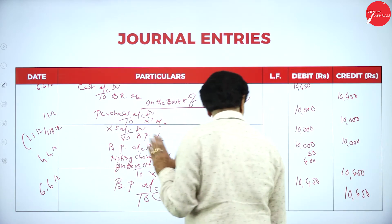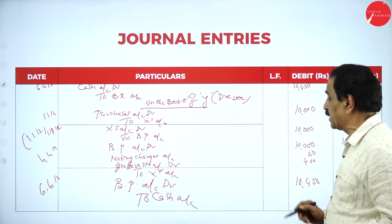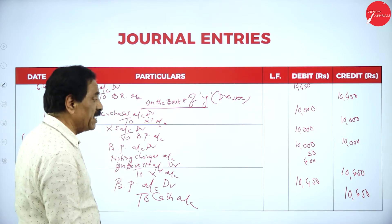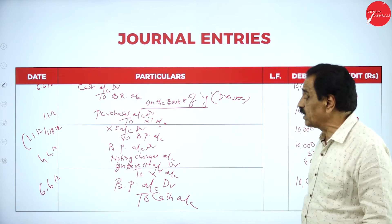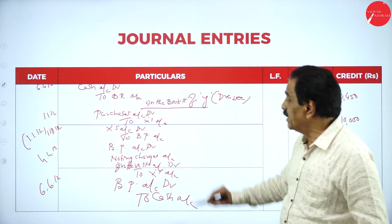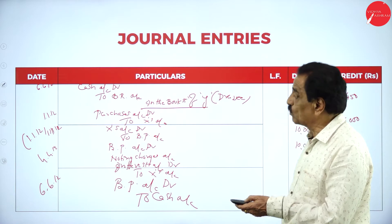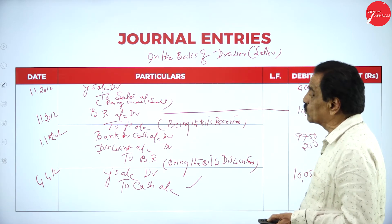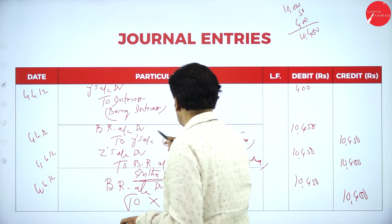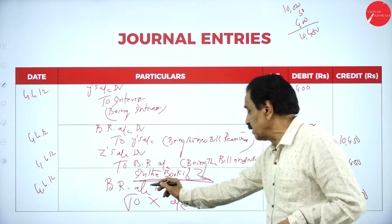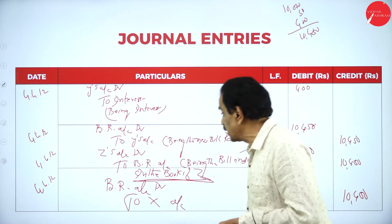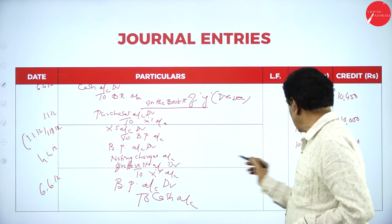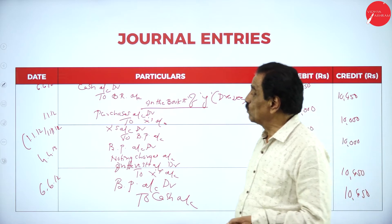X account debit — bills payable. He has to pay the bill amount: 10,000, noting charges 50, interest 400. To X as the creditor. BP account debit, noting charges account debit, interest account debit to X account. He pays X — BP account debit to cash account, 10,450. X has been paid on behalf of Y — 10,050. Y has to pay the interest. He receives the new bill: BR account debit. The bill should be honored: Z account debit to BR account. In the books of Z, he receives the bill from X; then the bill is honored — cash account debit to BR account.